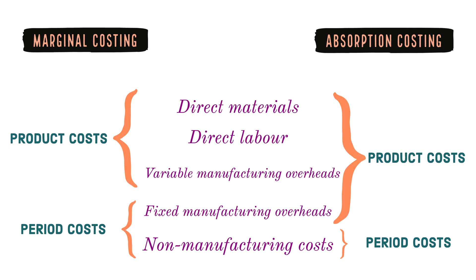When it comes to the differences, absorption costing takes into account fixed manufacturing cost as part of the product costs, whereas marginal costing does not take into consideration fixed manufacturing costs as part of product costs. Rather, fixed manufacturing costs are treated as period costs in marginal costing.